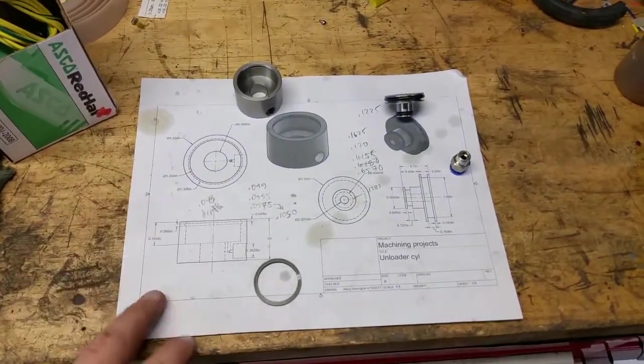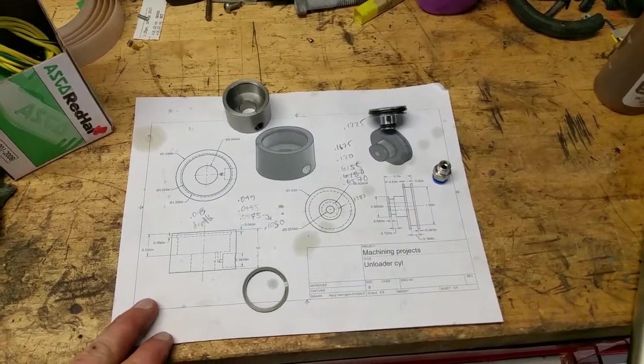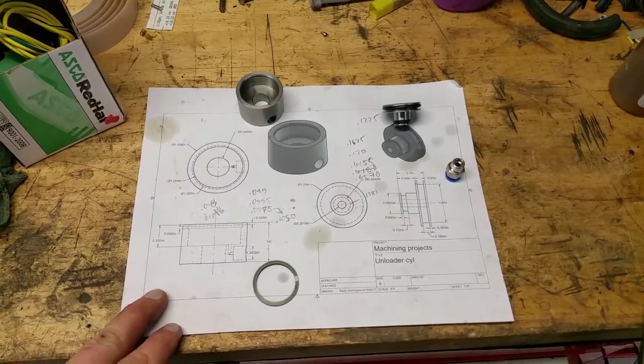What I have here is a small air piston or air cylinder that I made to actuate the unloader that's on my air compressor.